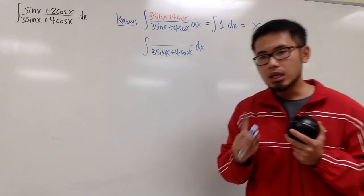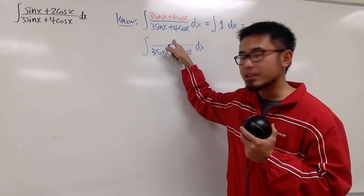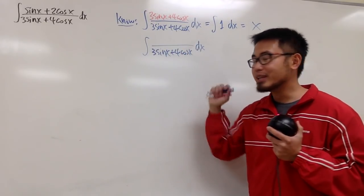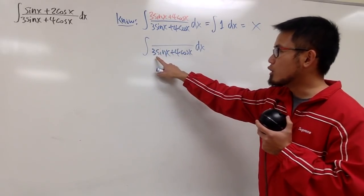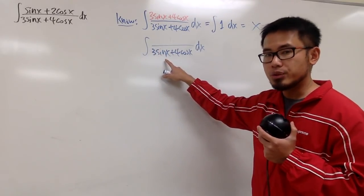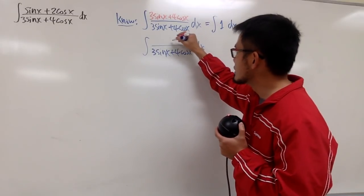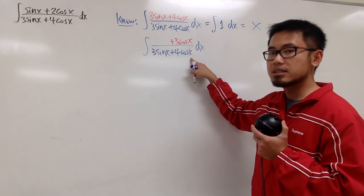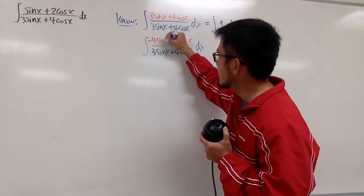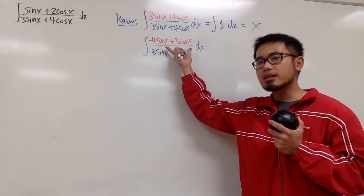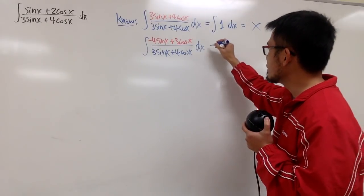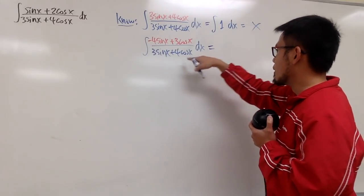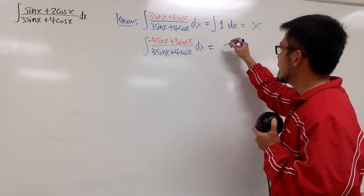But you know, if the top happens to be exactly the derivative of the bottom, this is just going to be ln of the denominator, isn't it? So if you look at this right here, the derivative of 3 sine x is 3 cosine x. So let me just put this down, plus 3 cosine x. And the derivative of 4 cosine x is negative 4 sine x. If I just put this on the top, this is just as easy, because all in all, you can do a u substitution, that u equal to this, and you end up with the integral of 1 over u, pretty much, and this is going to be ln.